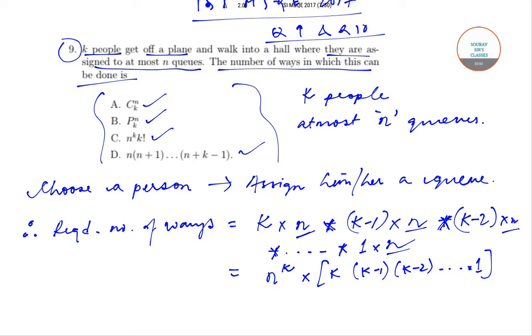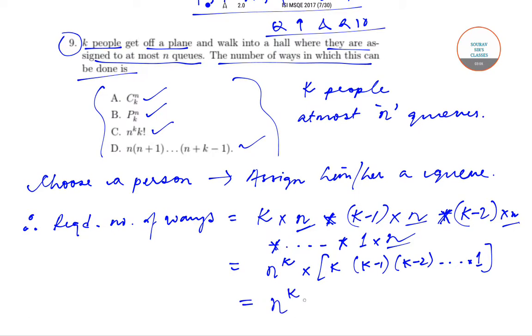So this gives us n to the power k into k factorial, which is option c. Now let's move on to the next question.